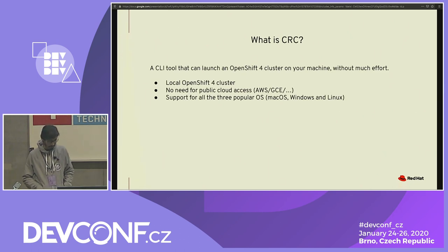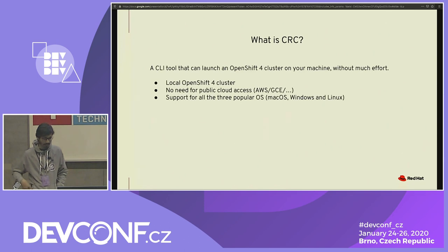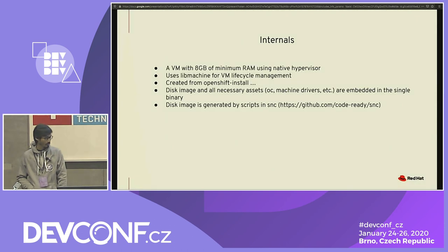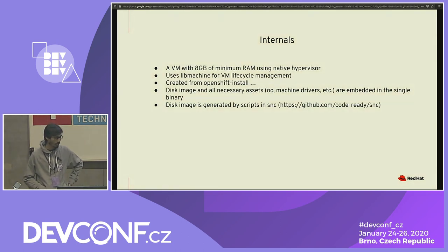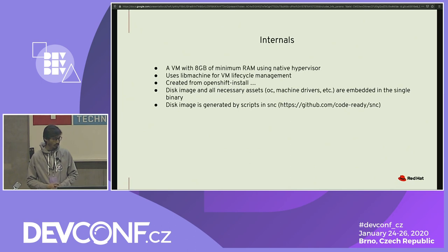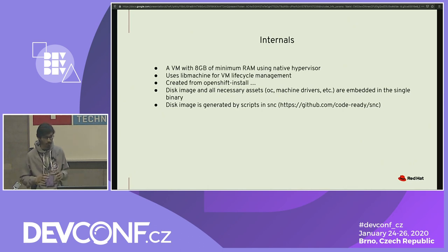Many developers who want to deploy their applications to OpenShift use development machines that are not necessarily Linux — they use Mac mostly and Windows. With CodeReady Containers, we wanted a local OpenShift 4 cluster that would work on macOS and Windows with the same CLI options and same commands, like Minishift. Internally, CodeReady Containers creates a VM derived from OpenShift install with a minimum of 8 GB RAM. We use the native hypervisor the OS provides: HyperKit for macOS, LibVirt for Linux, and Hyper-V for Windows. We also use LibMachine, Docker Machine's internal library, to manage the VM lifecycle.